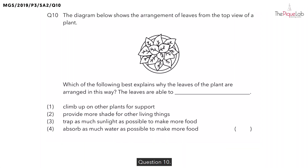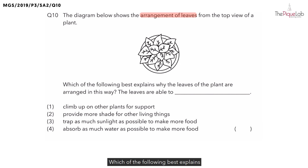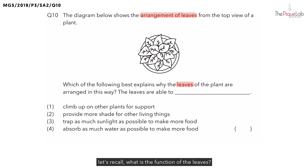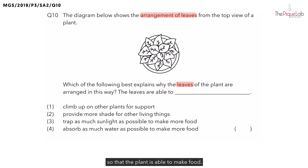Question 10. The diagram below shows the arrangement of leaves from the top view of a plant. Which of the following best explains why the leaves of the plant are arranged in this way? Now before we answer this question, let's recall what is the function of the leaves. The leaves help to trap sunlight for photosynthesis so that the plant is able to make food.